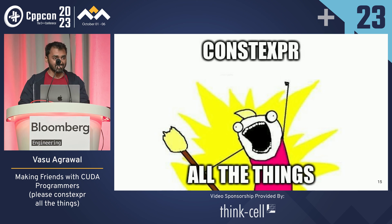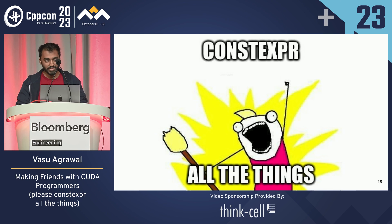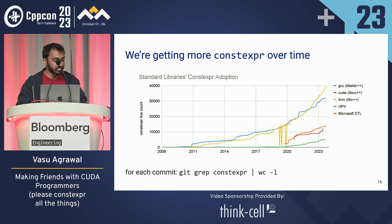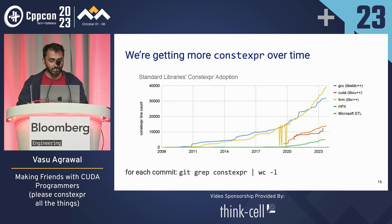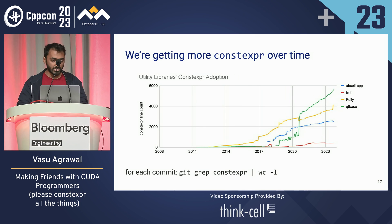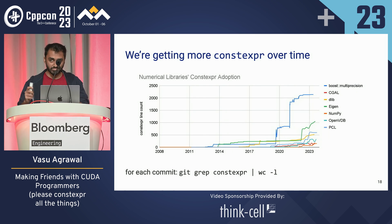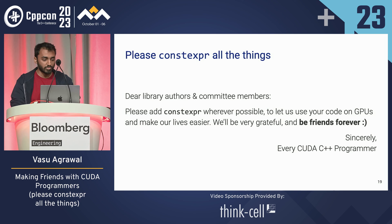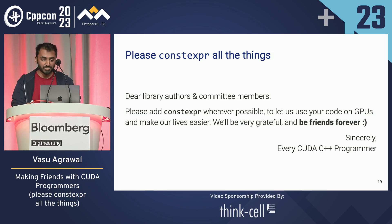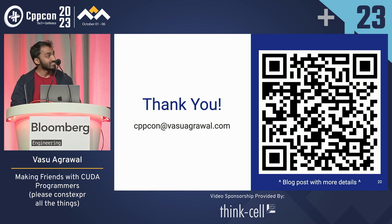This is in the slides — we are getting more constexpr over time. Here's a quick chart showing the number of lines containing the word constexpr in the standard libraries, as well as utility and numerical libraries: number goes up. So in summary: please constexpr all the things. Dear library authors, please add constexpr wherever possible — let us use your code on GPUs and make our lives easier. We'll be very grateful and friends forever. Sincerely, every CUDA programmer. Thank you.